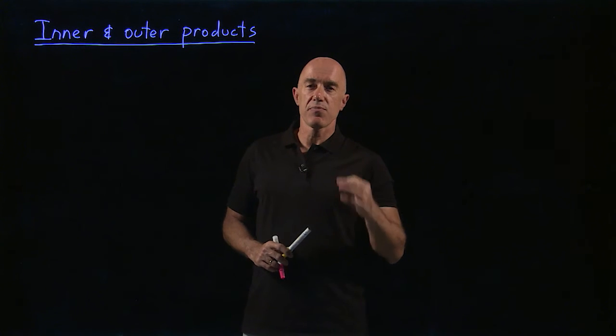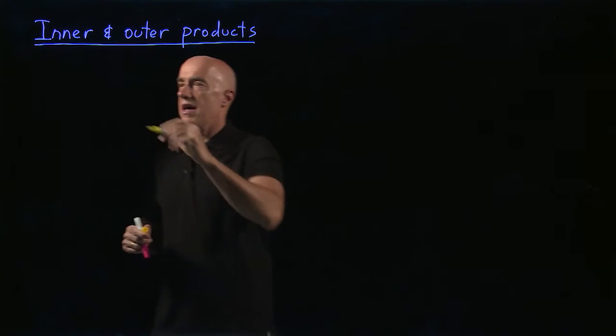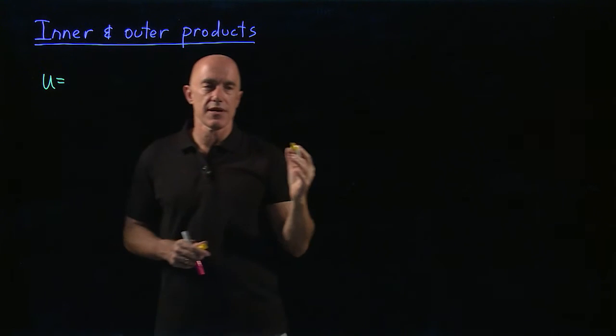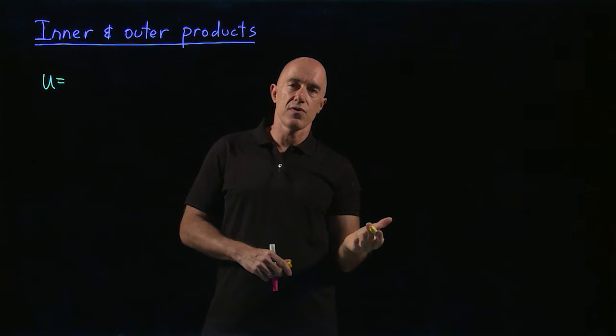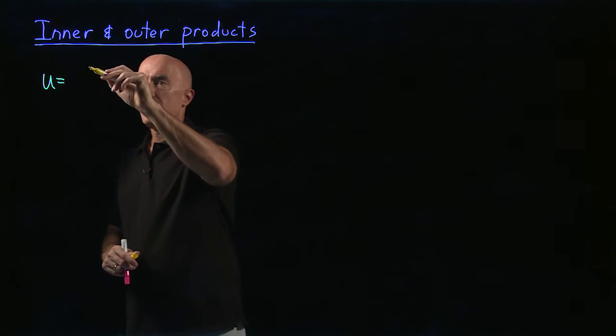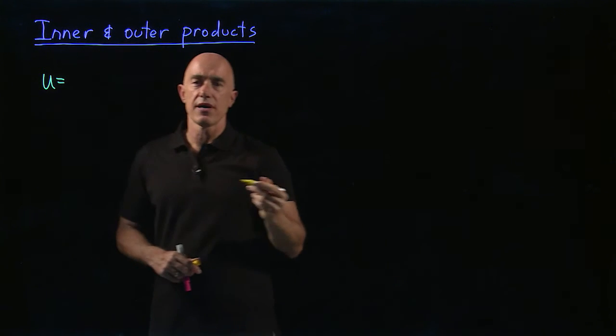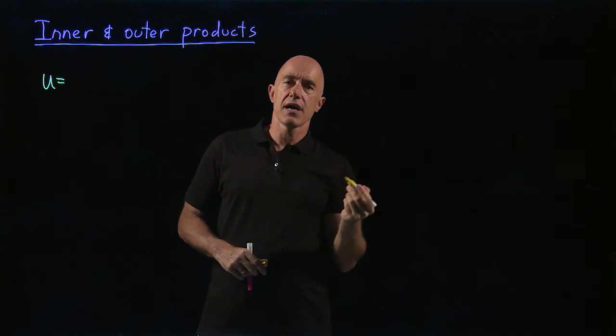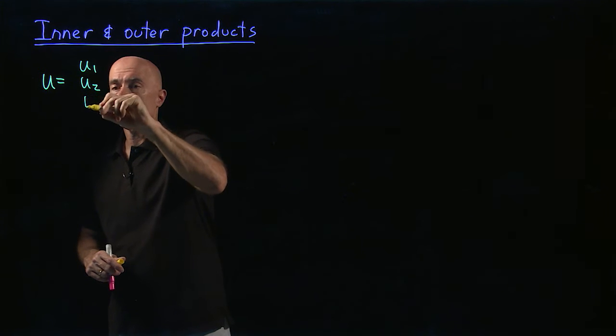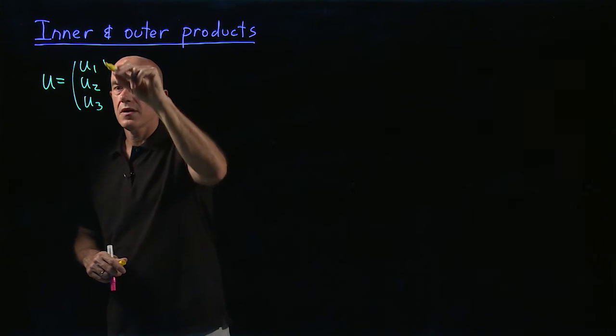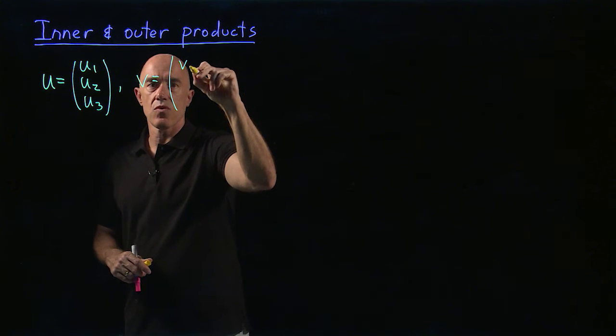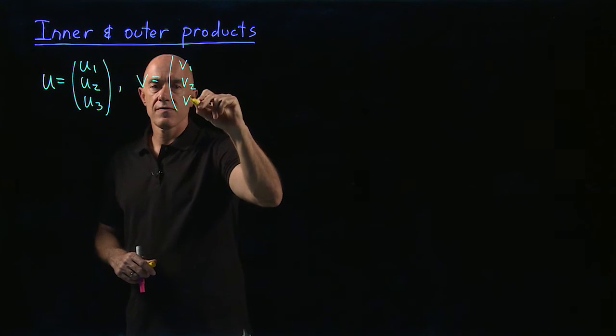So let's start with the inner product. This is the inner product between two vectors. We have two vectors, here we're going to use column vectors, which is standard for matrix algebra. So let's call the first vector u, and that will have three rows, one column, three by one. So this is u1, u2, u3. And the second vector we'll call v, which is v1, v2, v3.